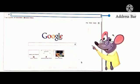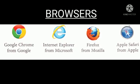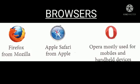Website is accessed by using the website address, which is also called as URL — Uniform Resource Locator — and the website address appears on the address bar of a browser. Some of the browsers are Google Chrome, Internet Explorer, Opera, Firefox, and Apple Safari.